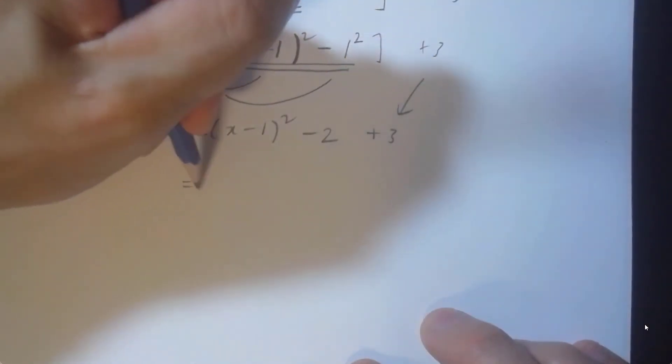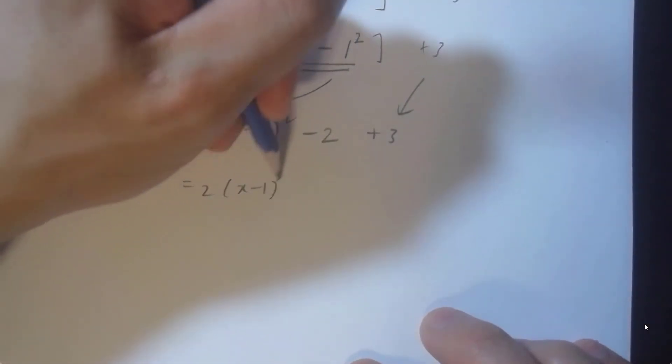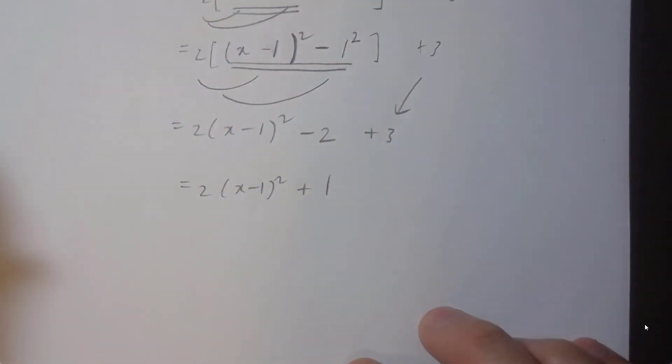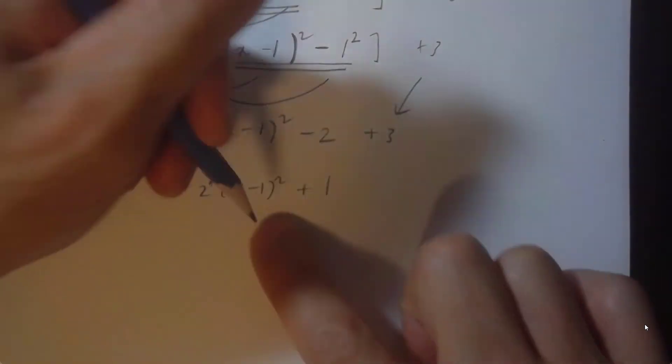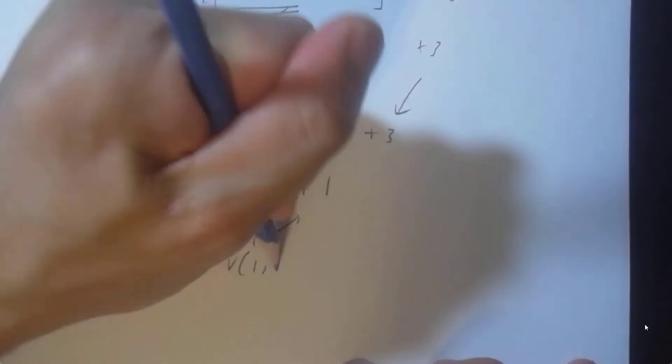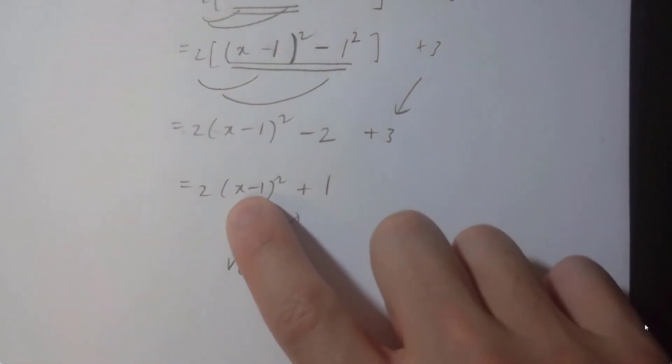And we're just about done. Negative 2 plus 3 is 1. And why did we complete the square? Because now we know the vertex. The vertex here is 1, 1. The opposite of negative 1 is 1.